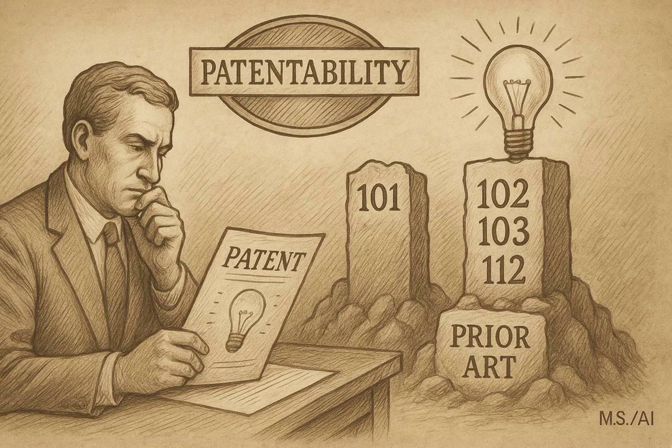Welcome back to The Deep Dive. We're continuing our journey through the MPEP, that's the Manual of Patent Examining Procedure. And today we are hitting a really, really crucial section, Chapter 2100, which is all about patentability. This is foundational stuff. If you want a U.S. patent, your invention has to pass muster under the rules laid out here.